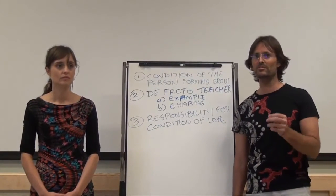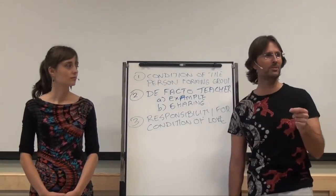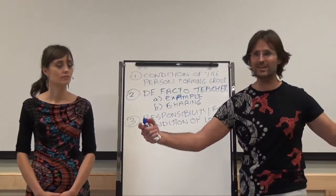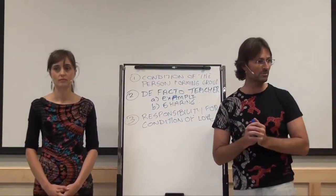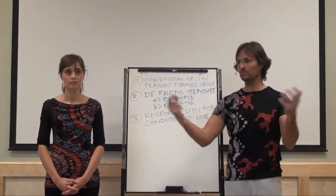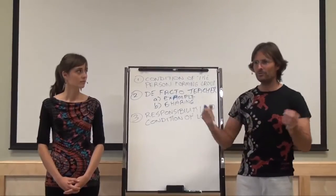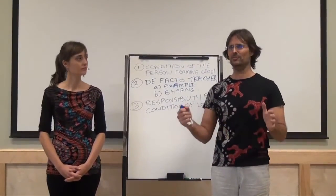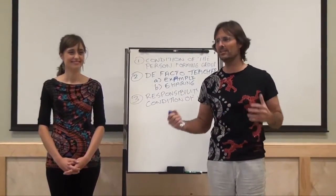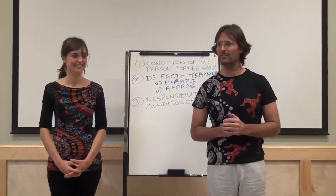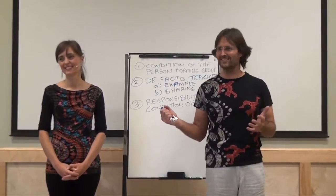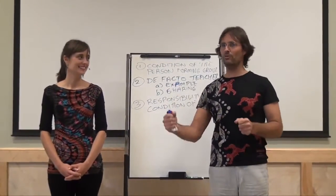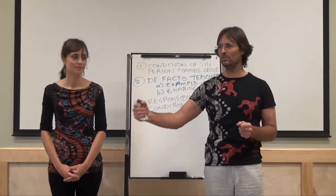But the responsibility for the condition of love exists with the person who created it. The de facto teacher is the person who created it, right? And the condition of the person forming the group is going to have a large effect on who comes. In other words, it's the condition of the person forming the group that determines what attractions primarily are going to be in effect in the group. Is that not true? It's a soul drawing people in. So if you're a male and you start a group and there's all these five angry women come along, that's your first group. What does that tell you?